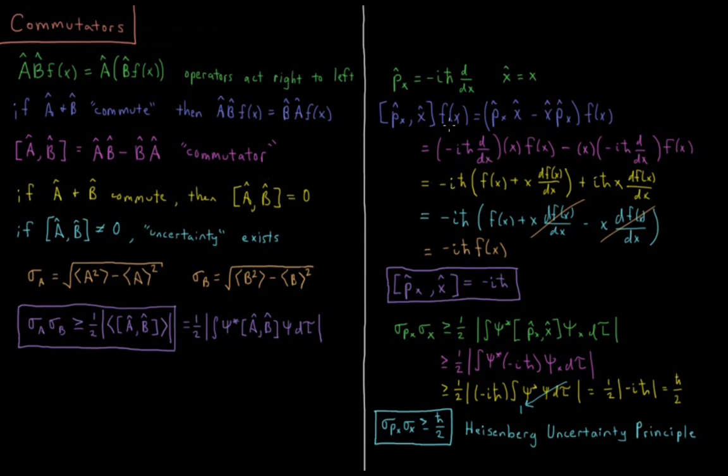Okay, so let's look at this relationship for the momentum and position operators. Momentum operator, we remind ourselves, is minus i h bar first derivative with respect to x. The position operator is just multiplying times x.